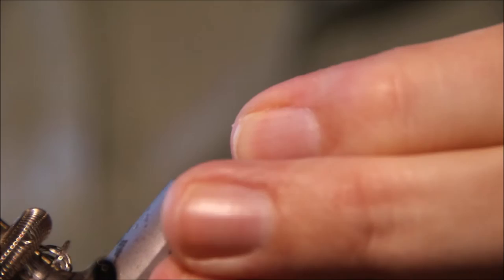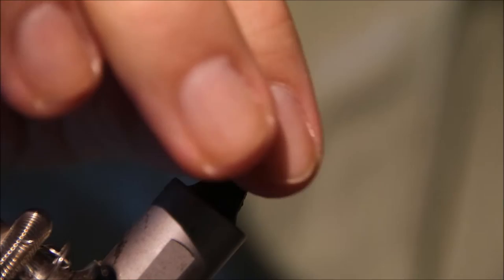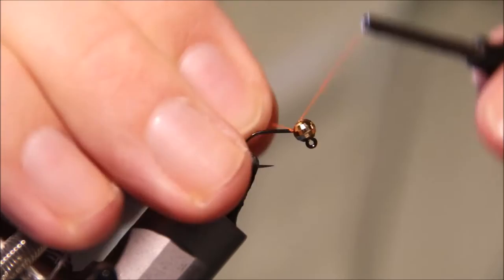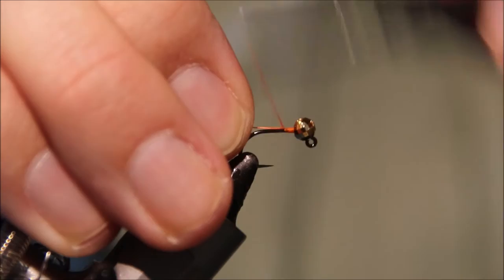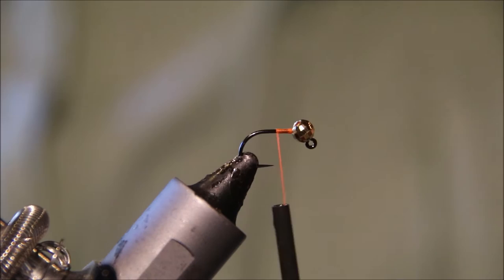I'm tying this in a size 14. 14's quite a good size for your short line nymph, I find. It represents a fair amount of species but it's also big enough that it can easily be seen. The fish can pick it out, and they often will even if they're feeding on something smaller.